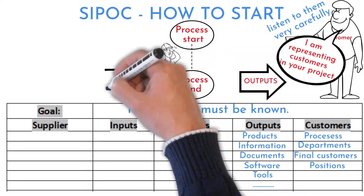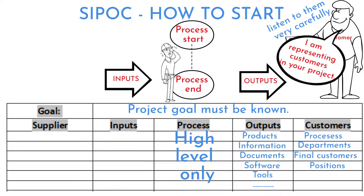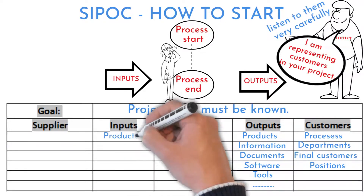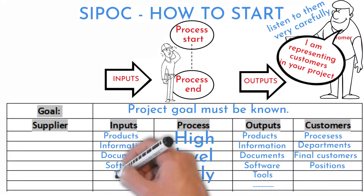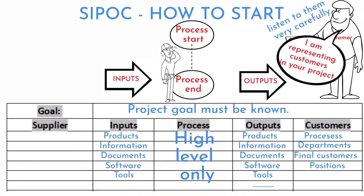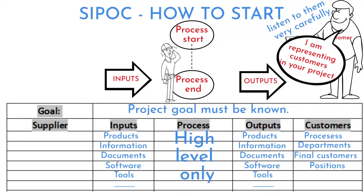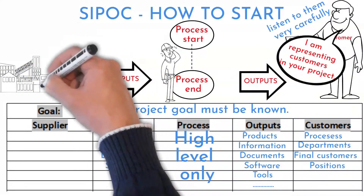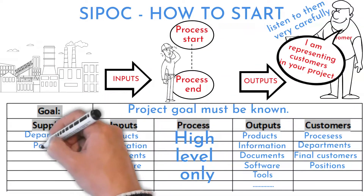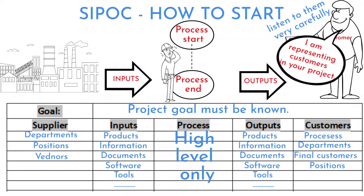Continue with required inputs to the process. Again, list products, information, documents, software, tools, and required supplies for the process to be functional. And finally, list the suppliers — all departments, positions, and vendors delivering the identified inputs.